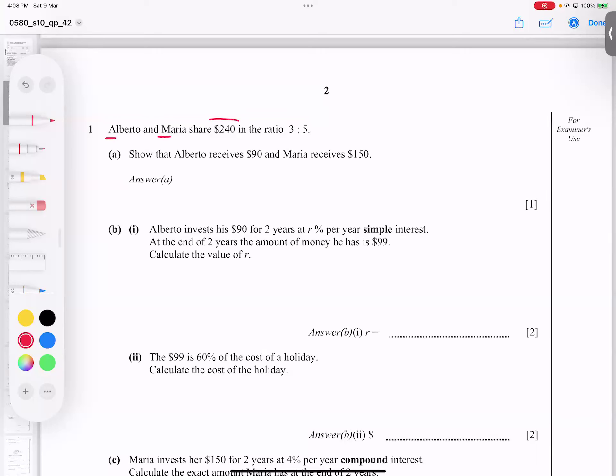They have total money. Total money they're going to share in the ratio. Alberto will get three ratio and Maria will get five ratio. Very clear. So I write two titles here: dollar and ratio. $240 dollars total, and total ratio is five plus three equals eight. So total money, total ratio, right in front of each other.